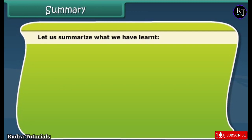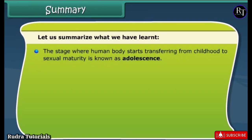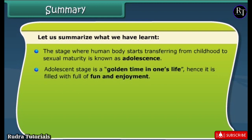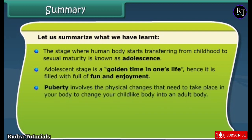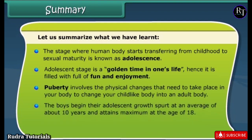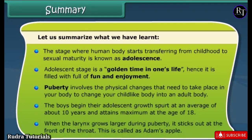To summarize: the stage where the human body starts transferring from childhood to sexual maturity is known as adolescence — a golden time in one's life, filled with fun and enjoyment. Puberty involves the physical changes that transform a childlike body into an adult body. Boys begin their adolescent growth spurt at an average of about 10 years and attain maximum at the age of 18. When the larynx grows larger during puberty it sticks out at the front of the throat — this is called Adam's apple.